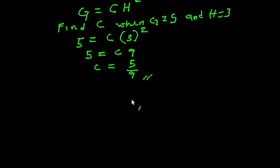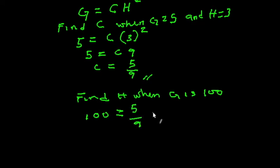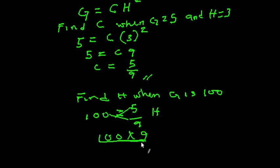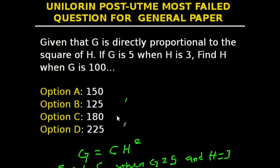Now we find h when g is 100. Substituting into the formula: 100 equals (5/9) times h squared. Cross-multiplying: h squared equals 100 times 9 over 5, which equals 180. So h squared equals 180 and our answer is 180, which is option C.